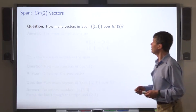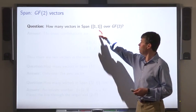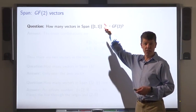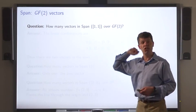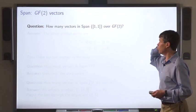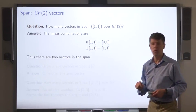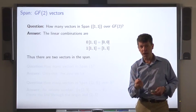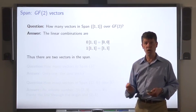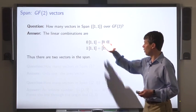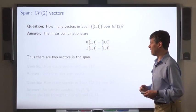Here's an example. How many vectors are there in the span of a set consisting of just one vector over GF(2)? There are two possible coefficients, 0 and 1, so it turns out there are two vectors in the span.